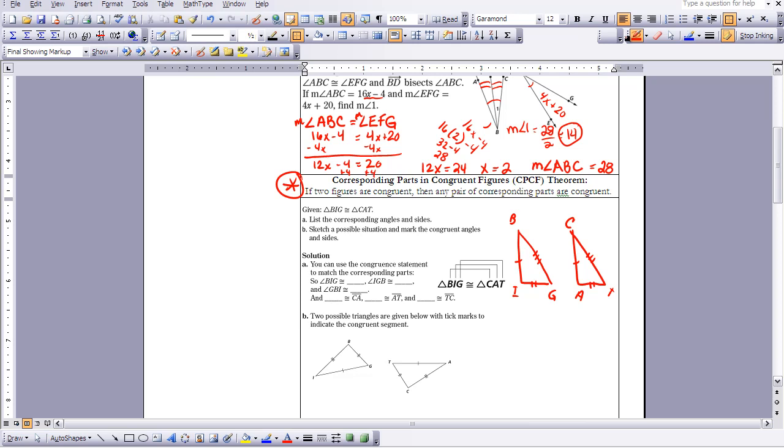Then I can use that to identify corresponding sides and corresponding angles. So this angle BIG needs to match up with angle CAT. And angle IGB is going to match up with angle ATC.